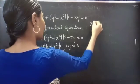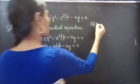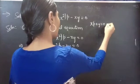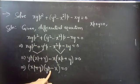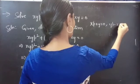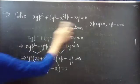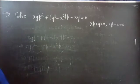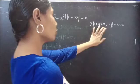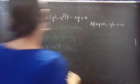Then x·p + y = 0 or y·p - x = 0. We will find the solution for each factor separately.